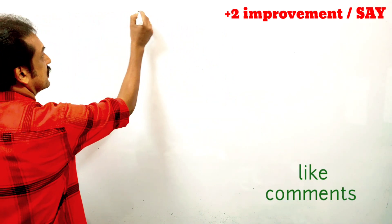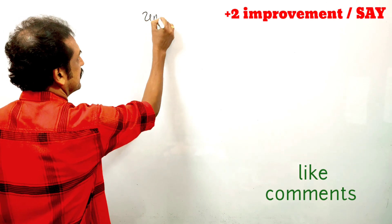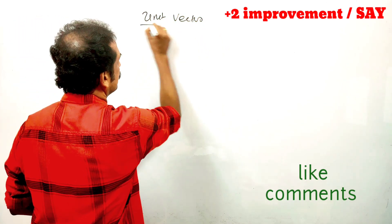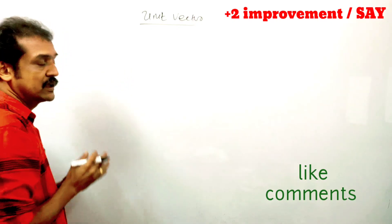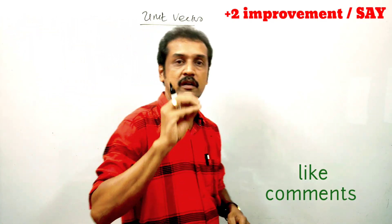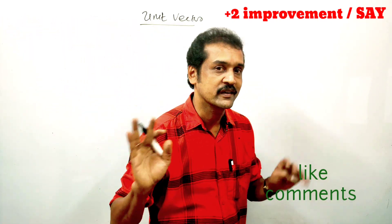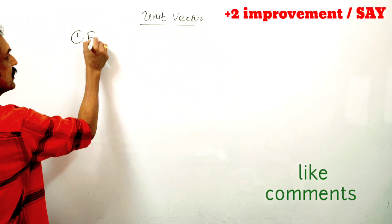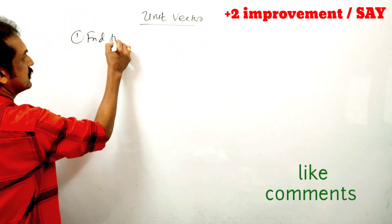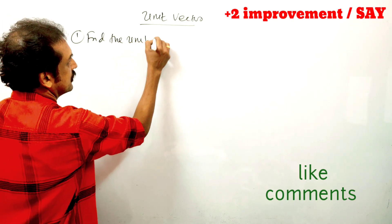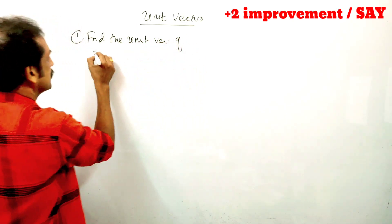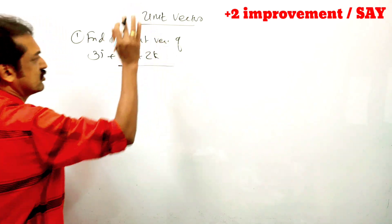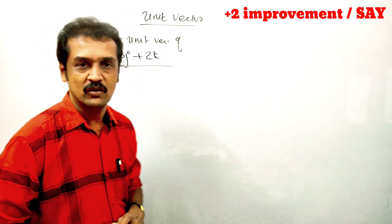Now we are going to look at the unit vector — very important. We are going to look at this 3 to 4 times. Find the unit vector of 3i plus 3j plus 2k. That is very important. Find the unit vector of a vector.